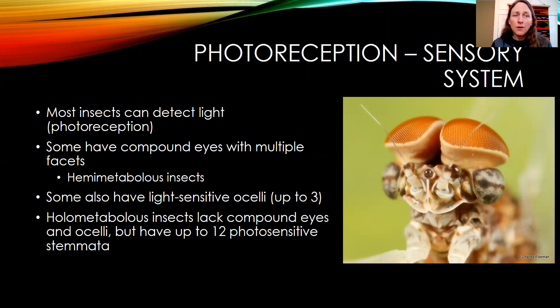The holometabolous insects lack both compound eyes and ocelli, but they have up to 12 photosensitive stemmata. So we're going to talk about three different types of insect light-sensing organs today.